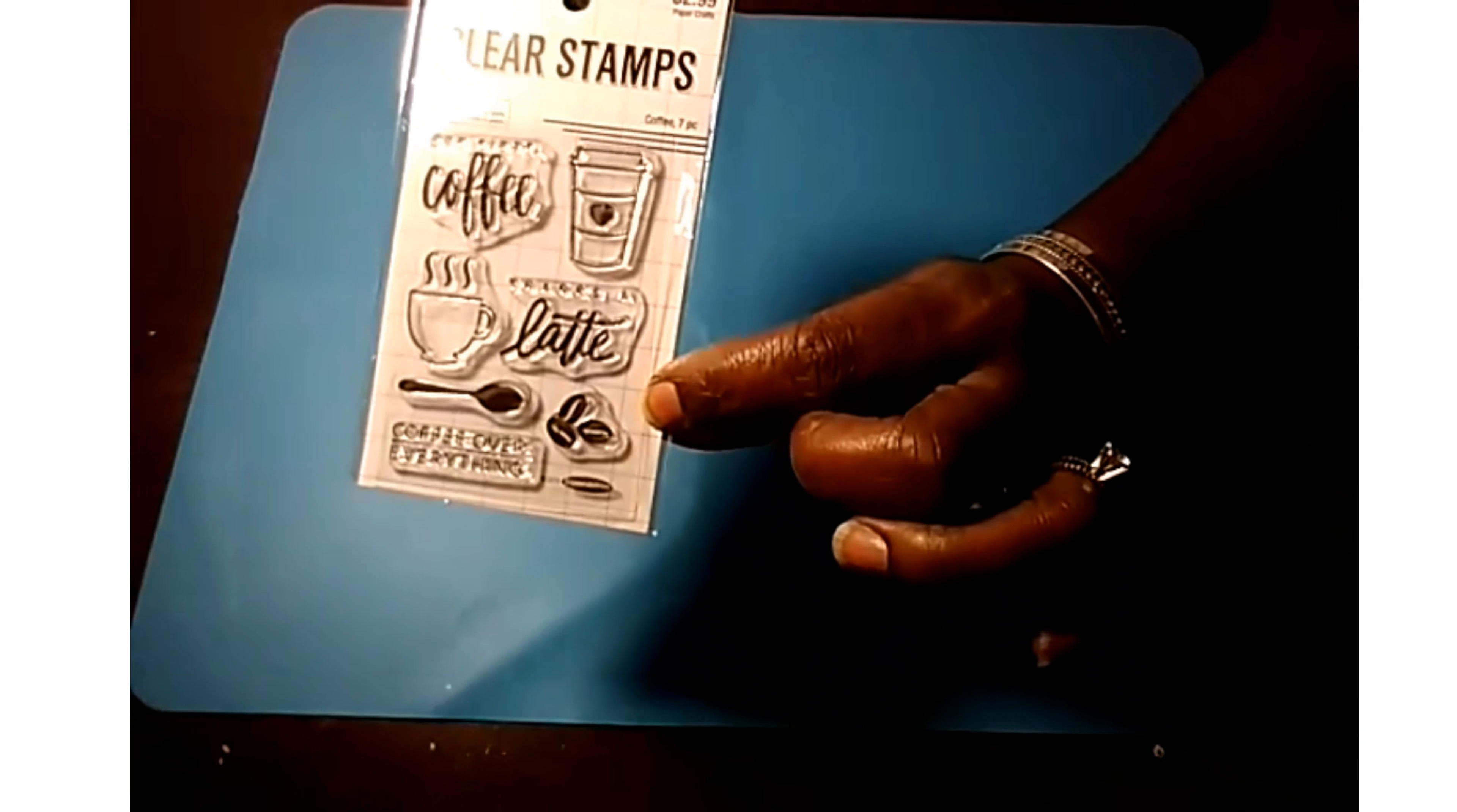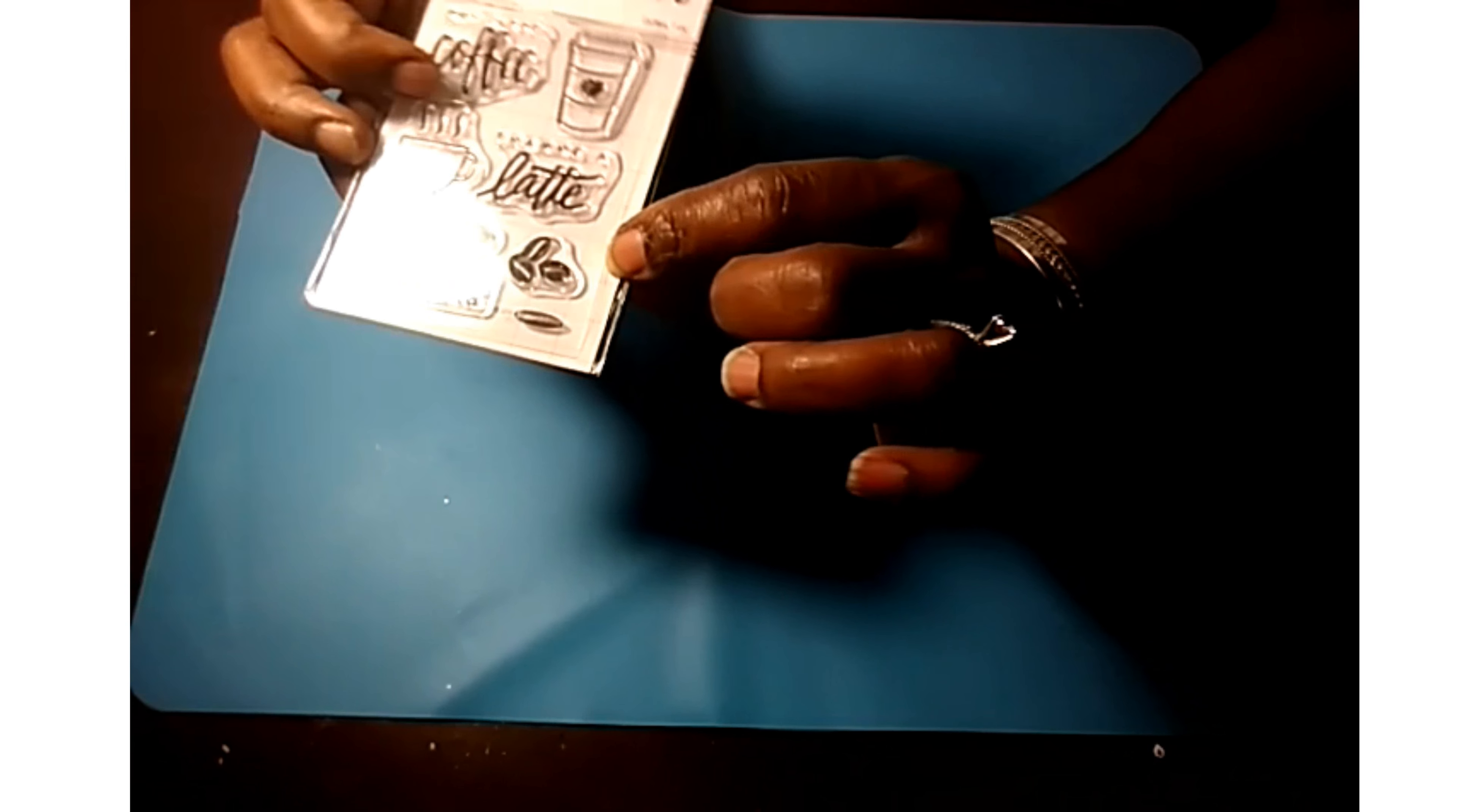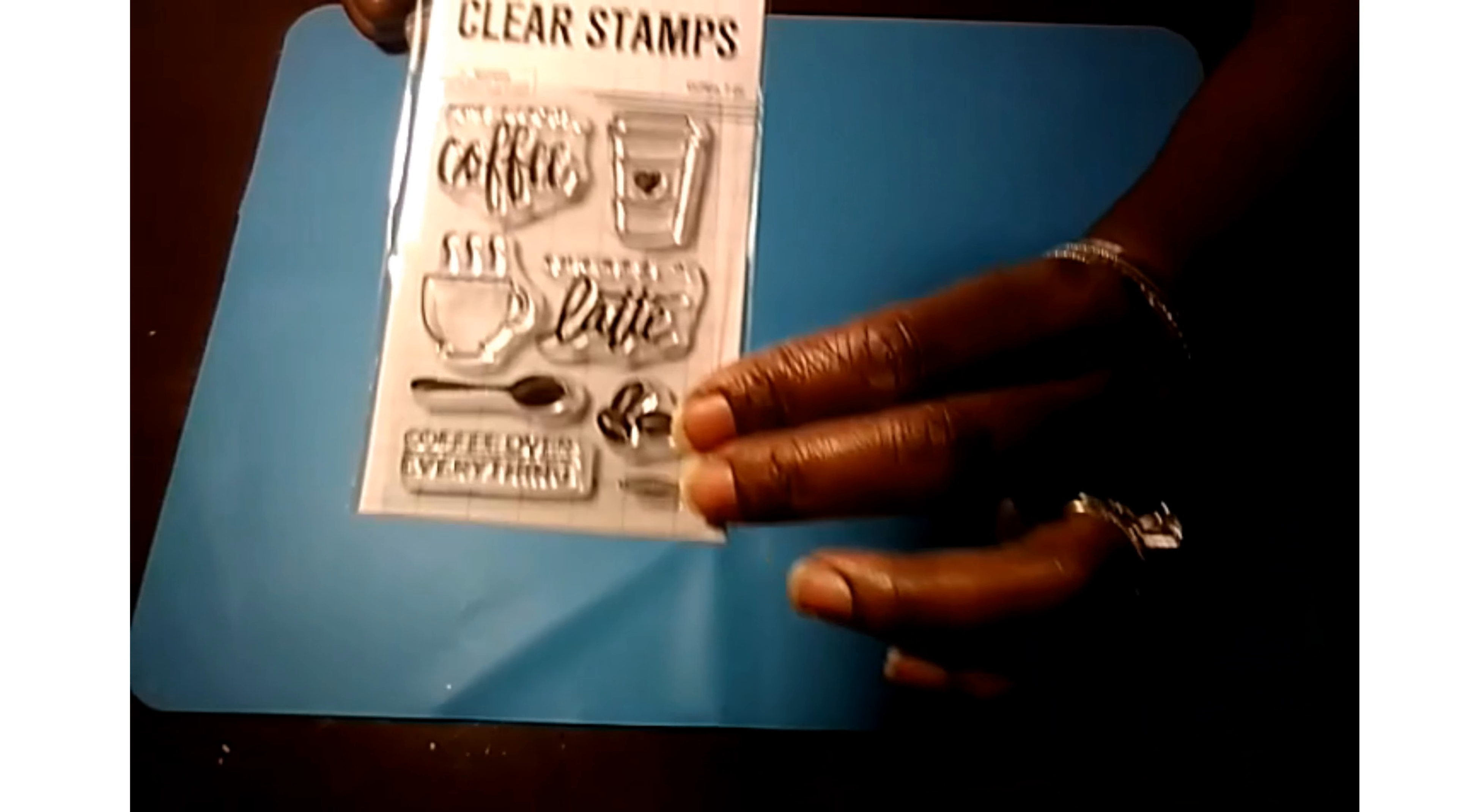And then you have stamp abilities coffee stamp set. Got the Starbucks one, but first coffee. Thanks a latte. Coffee over everything. And you got some coffee beans, a cup, and then a spoon, and then the coffee cup with the steam coming out of it. I thought that was adorable.